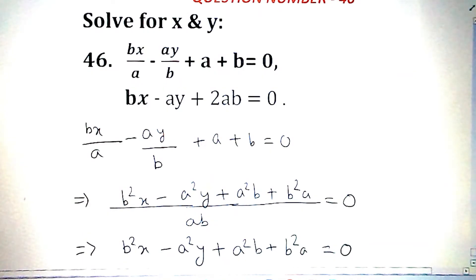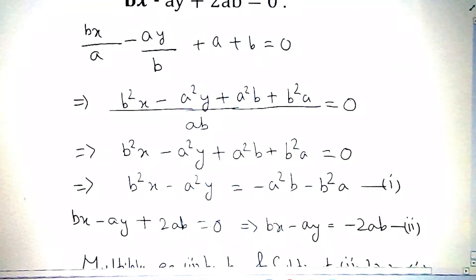First of all, we have to solve it by taking the LCM. Then the equation becomes b²x - a²y = -a²b - b²a. And the second equation, bx - ay + 2ab, we can write as bx - ay = -2ab. Now we have equation 1 and equation 2.